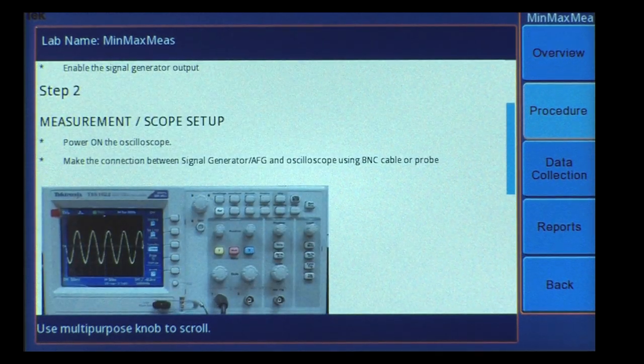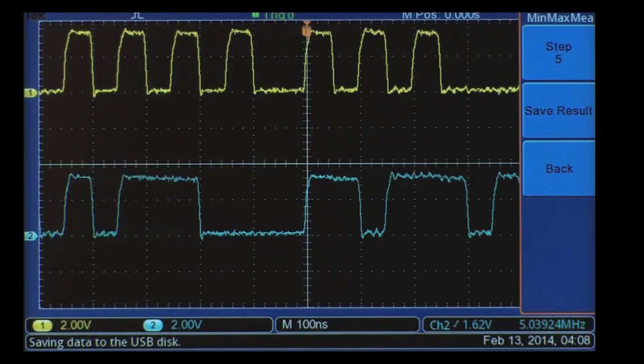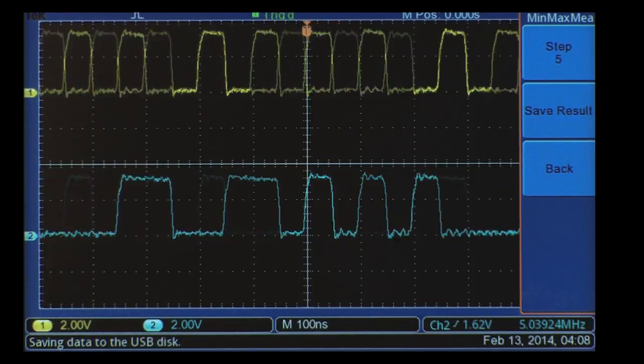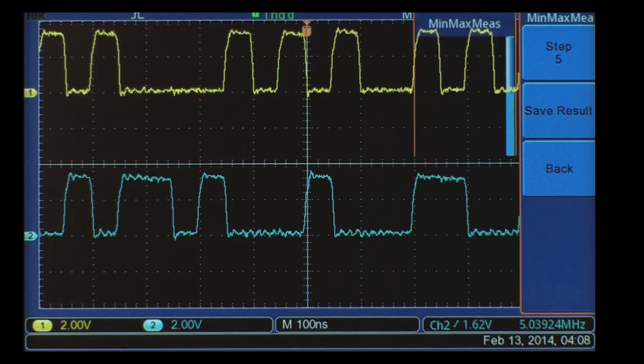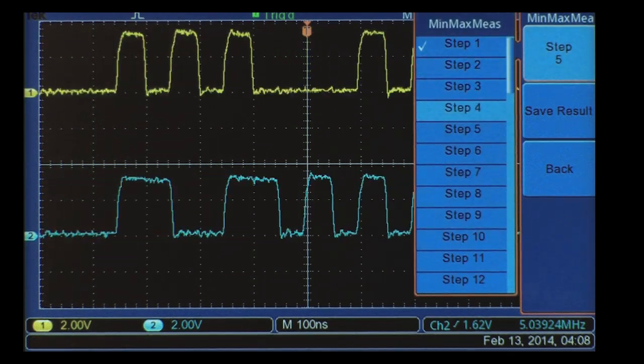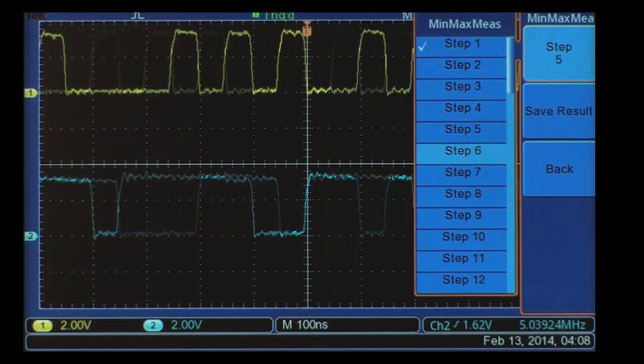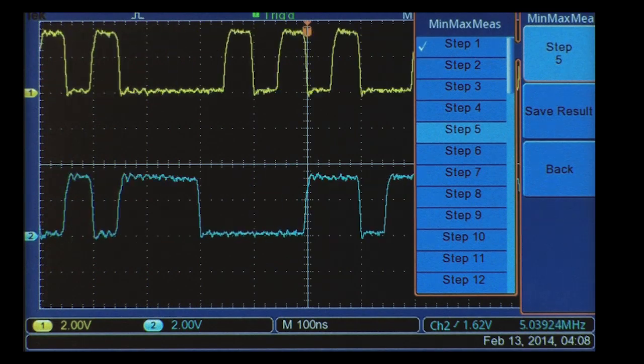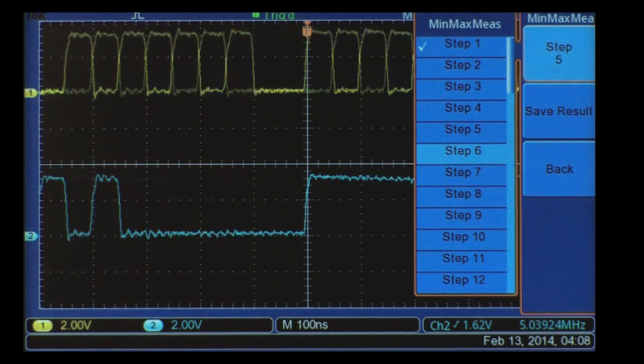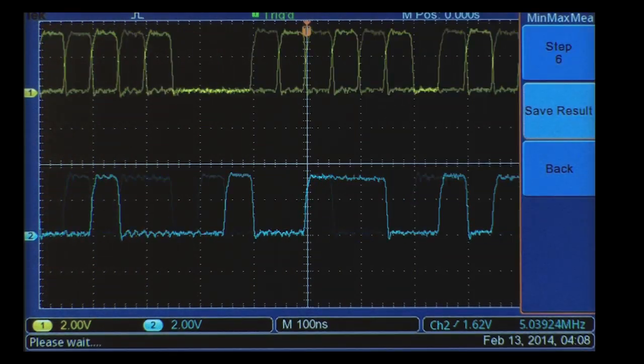The Data Collect button provides an easy way to navigate to the oscilloscope screen. When viewing the scope, the Step option is used to associate the current measurement screen to a specific step in the procedure, and the Save Result option saves the current screen image to a USB drive along with the assigned step information.